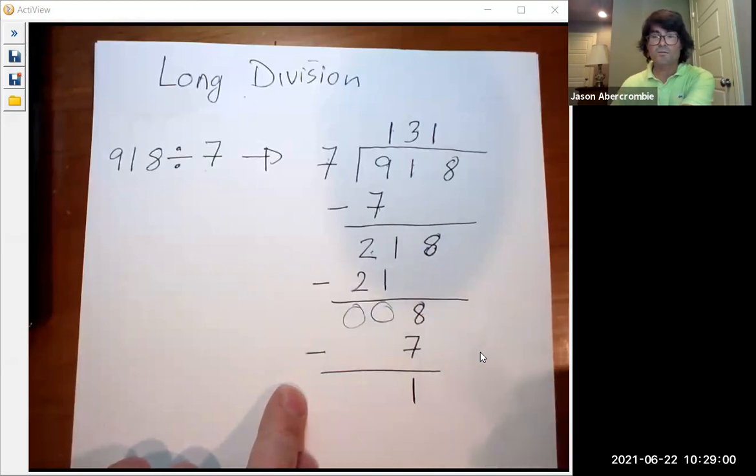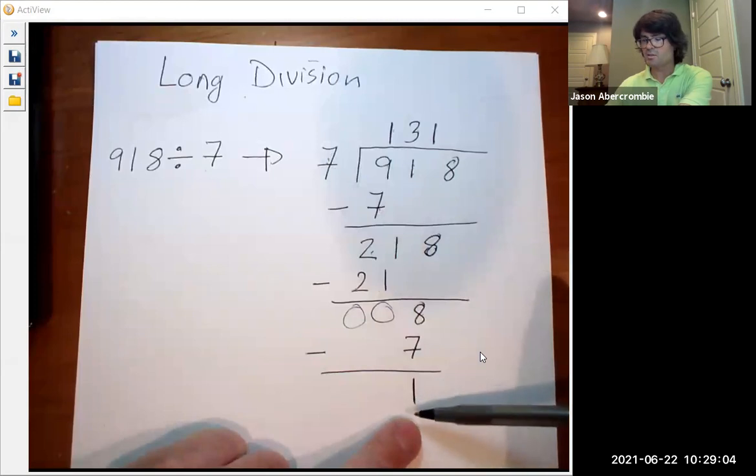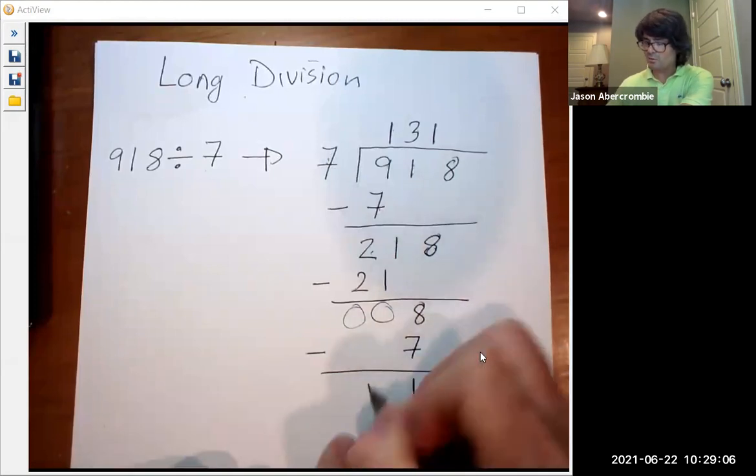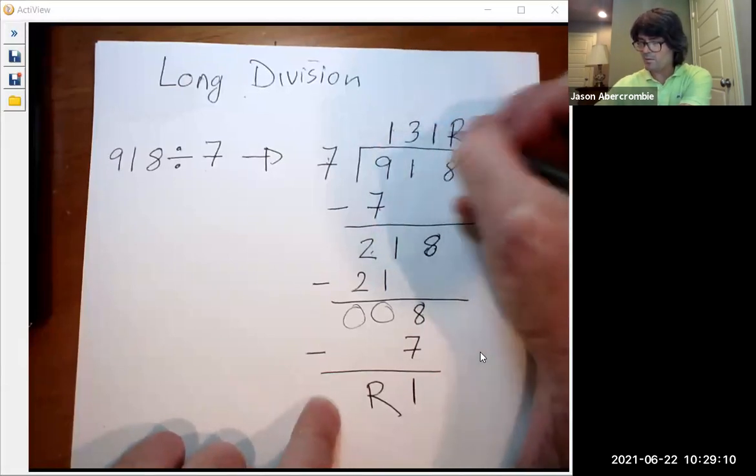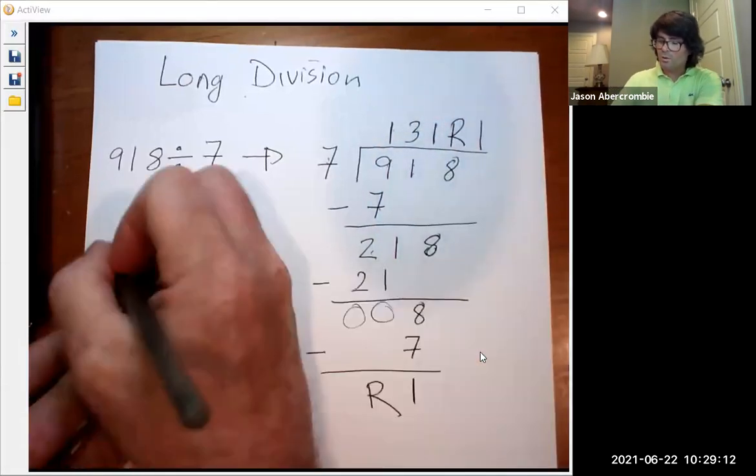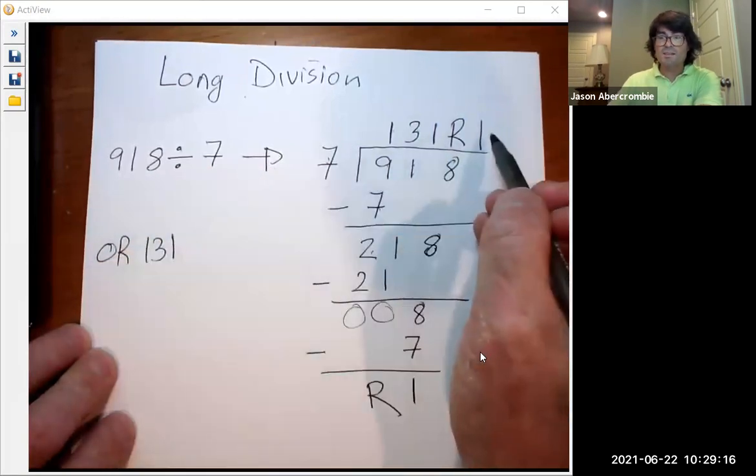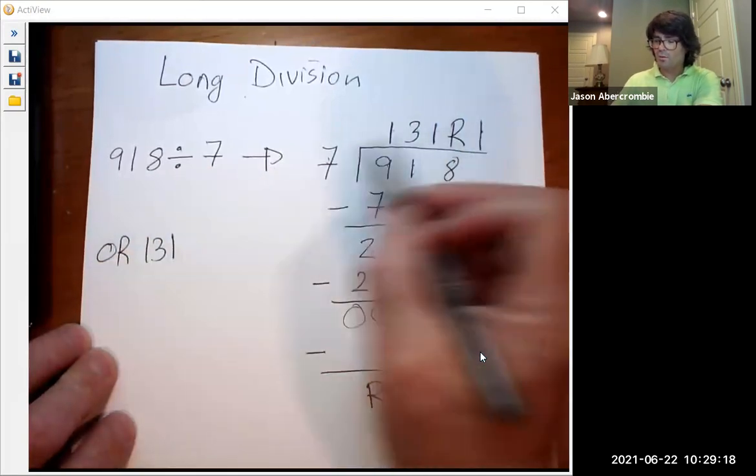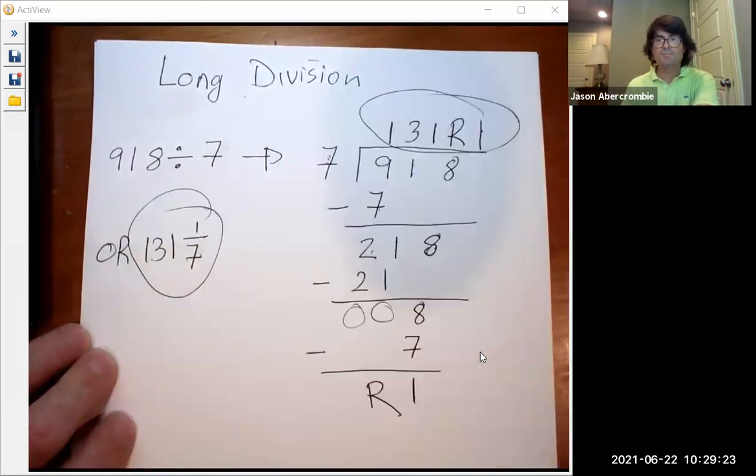And now we ask our final question. Does seven go into one? No, it doesn't. There's no more digits, so this is my remainder. You write 131 remainder one, or you could write this as a fraction with a one over seven. So you could write it as a mixed number like that.